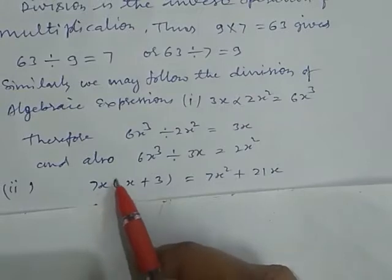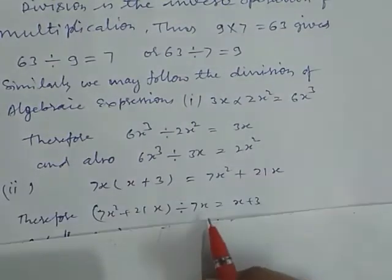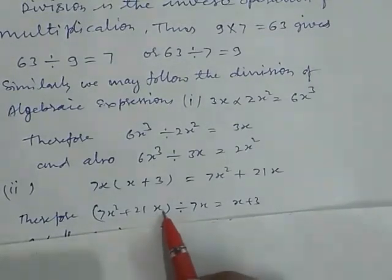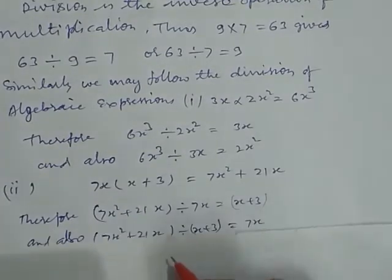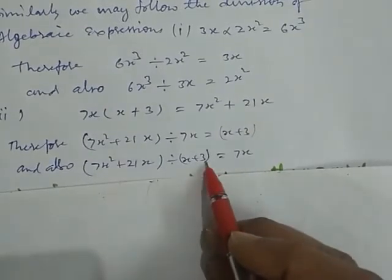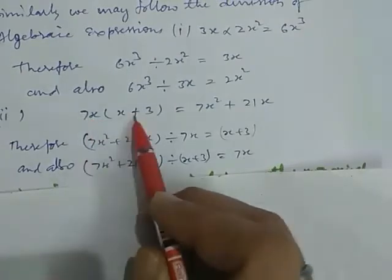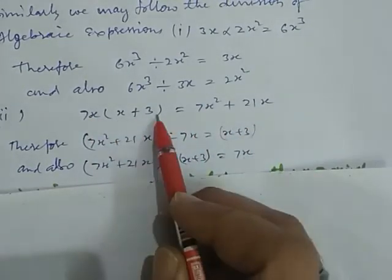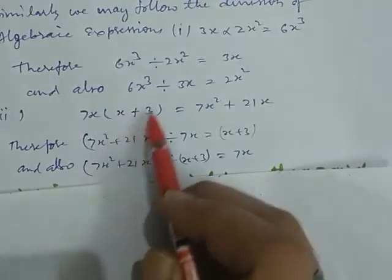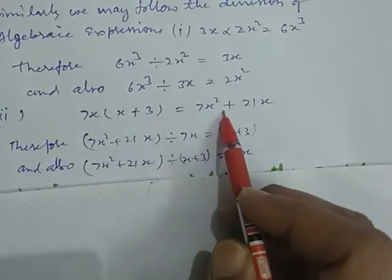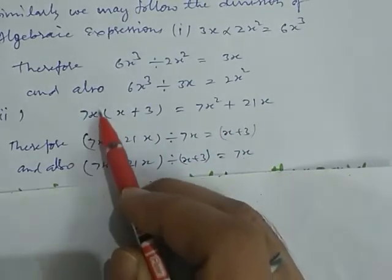Here, 7x into x plus 3 equals 7x square plus 21x. Therefore, 7x square plus 21x divided by 7x gives us x plus 3. Or, 7x square plus 21x divided by x plus 3 gives us 7x. Because this is the multiplication of both these parts — so division by any one part gives the rest part.